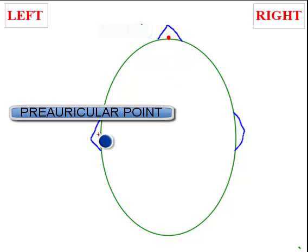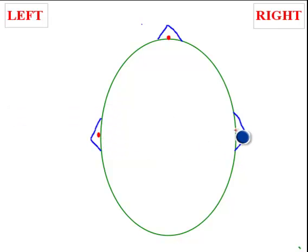You identify the two preauricular points, these are right in front of the tragus, in front of each ear, and you identify a bony landmark called inion, which is somewhere around here.